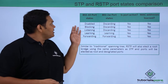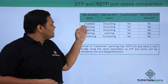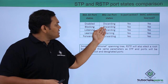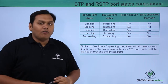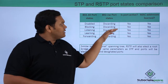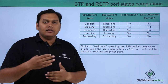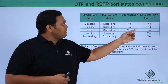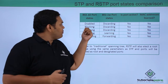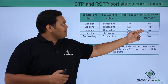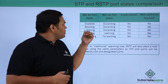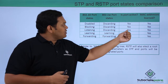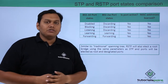Looking at the list, 802.1d port states are: disabled, blocking, listening, learning, and forwarding. In 802.1w, the port states are: discarding, discarding, discarding, learning, and forwarding. For the disabled and discarding state, the port is not active and MAC addresses are not learned. Similarly, in the blocking and discarding state, the port is not active and MAC addresses are not learned. In the listening state mapped to discarding in 802.1w, the port is active but MAC addresses are not learned.